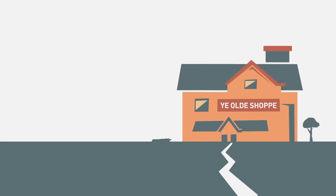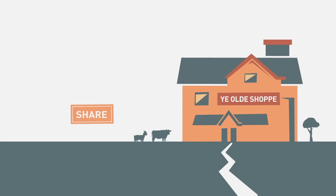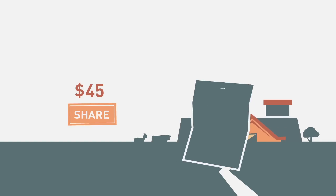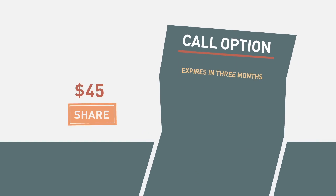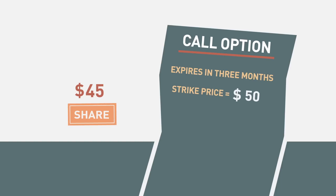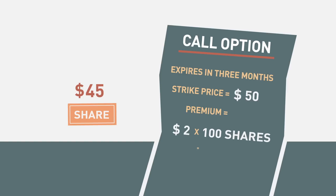For example, say a company's stock is trading at $45 per share and you anticipate that it might continue to rise, so you decide to buy a call option that expires in three months that will allow you to purchase 100 shares at a strike price of $50. For this privilege, you pay the writer a premium of $2 per share for a total of $200.